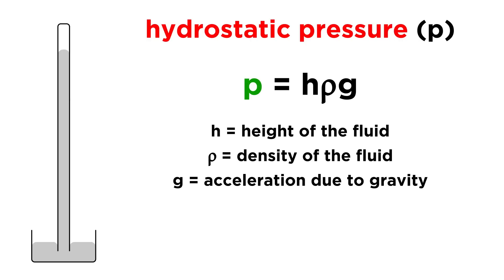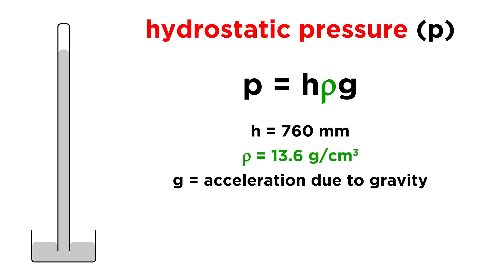For example, let's calculate the atmospheric pressure required to support a column of mercury with a height of 760 millimeters. The density of mercury is 13.6 grams per centimeter cubed, and the acceleration due to gravity on earth is 9.81 meters per second squared, so let's solve for P.